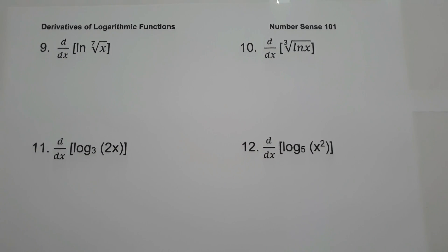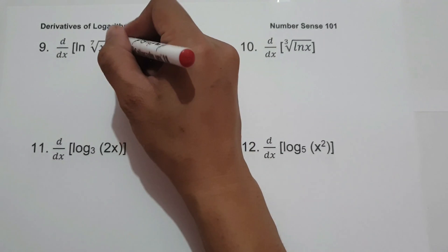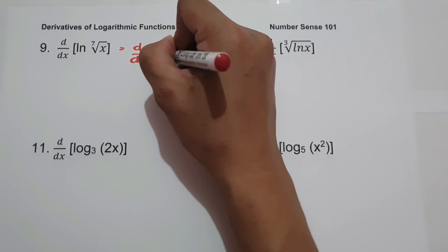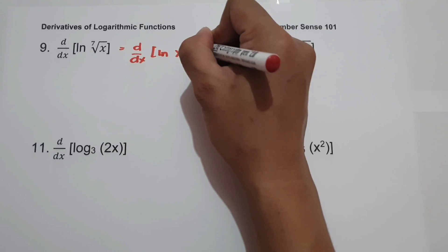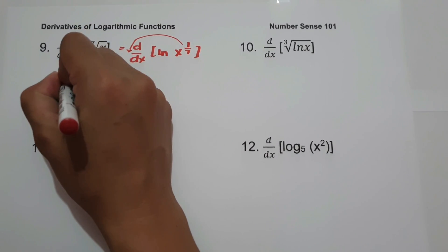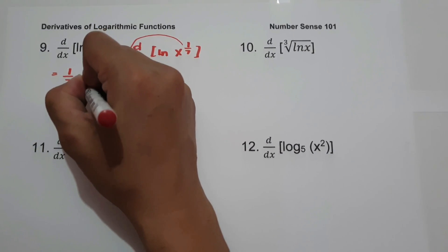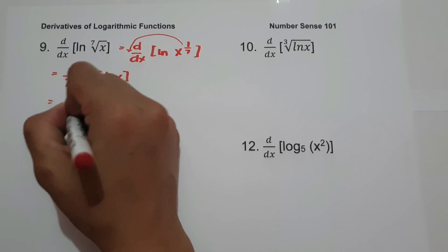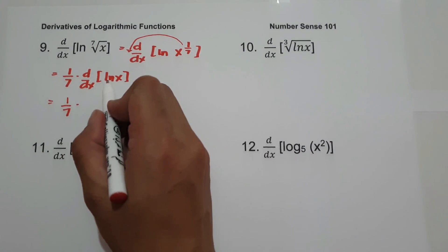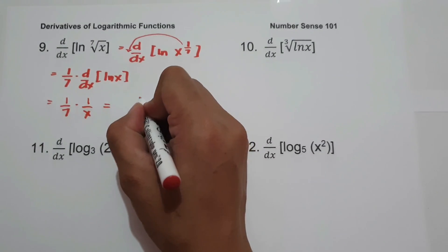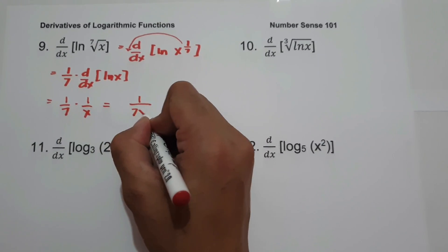Number nine: derivative of ln(⁷√x). The fastest way is to rewrite as the derivative of ln(x^(1/7)). We move 1/7 in front: (1/7) times the derivative of ln x. Since the derivative of ln x is 1/x, our final answer is 1 over 7x.